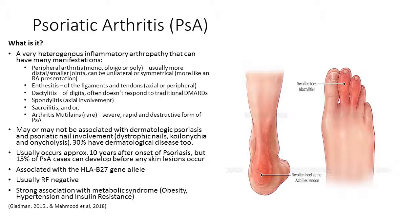Psoriatic arthritis may or may not be associated with dermatological manifestations, i.e. the skin condition psoriasis, or dystrophic nails, koilonychia, and onycholysis. Thirty percent of patients with psoriatic arthropathy also have dermatological disease. The onset of psoriatic arthritis usually occurs 10 years after the onset of psoriasis, but 15% of cases can develop before any skin lesions occur or in their absence. There is an association between psoriatic arthritis and the HLA-B27 gene allele, linking to the major histocompatibility complex, antigen presentation, and autoimmunity.